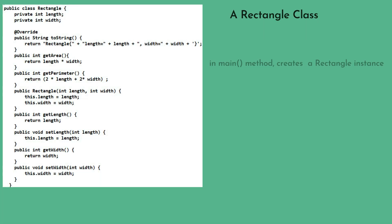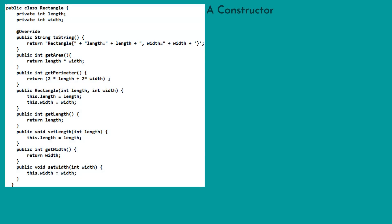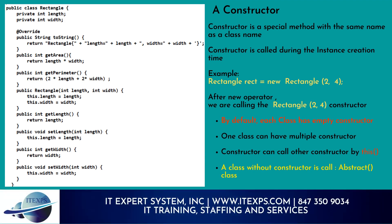Here is a Rectangle class with two attributes: length and width. It has one constructor — Rectangle with two parameters — and a few methods. To create a Rectangle instance, use the new operator. Example: Rectangle rect = new Rectangle(2, 4). After the new operator, we are calling the Rectangle(2, 4) constructor.